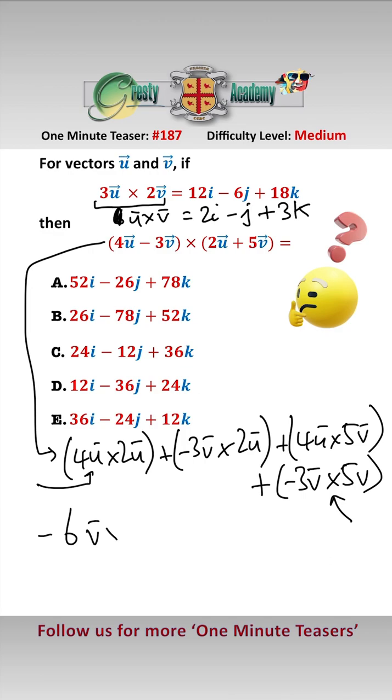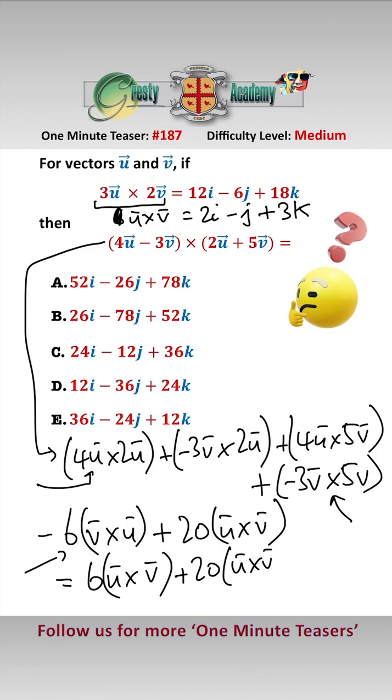minus 6v cross u add 20u cross v, and v cross u is equal to minus u cross v, so that equals 6u cross v add 20u cross v,